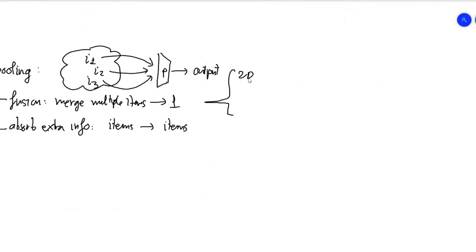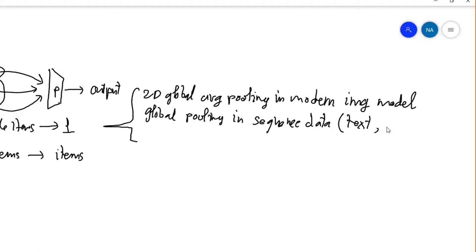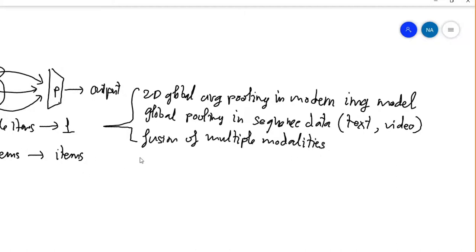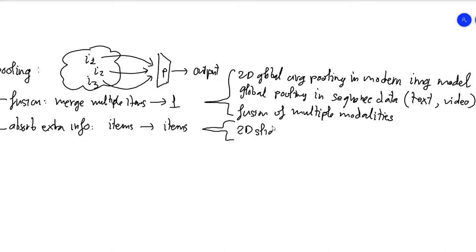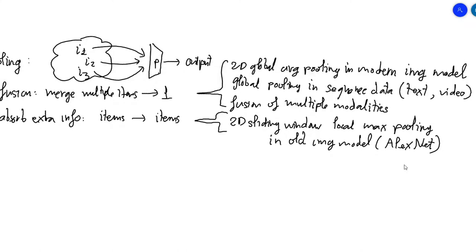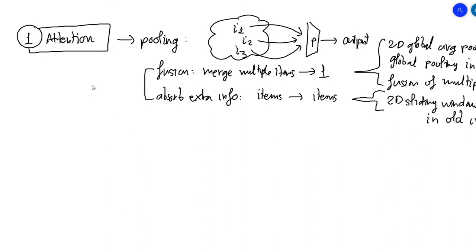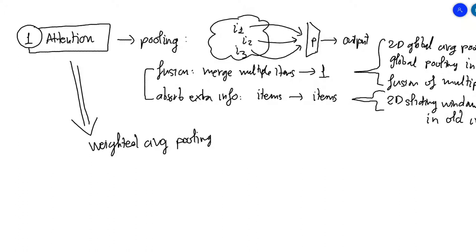Examples of the first use are 2D global average pooling in modern image models, or 1D global pooling in sequence data such as text or video, or in multi-modal settings where you fuse multiple features into one. An example of the second use is 2D max pooling in older image models, where you slide a small window at each spatial location and perform local max pooling, so the output at that location absorbs features from its neighborhood as well.